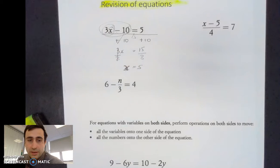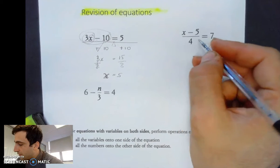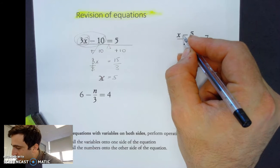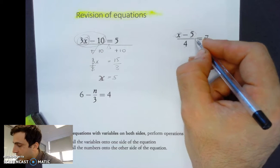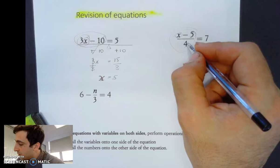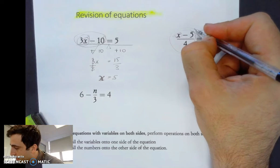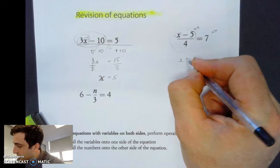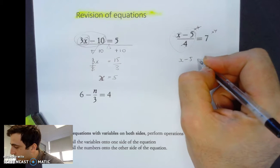Let's have a look at this one. This one's a little bit cheeky because everything above the line is being divided by 4. So the first thing we need to do is get rid of that divide by 4 by multiplying by 4. Then we end up with x minus 5 equals 7 times 4, which is 28.